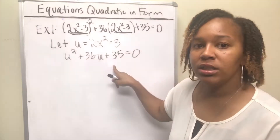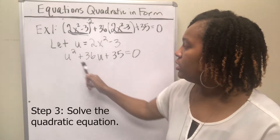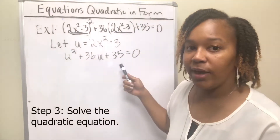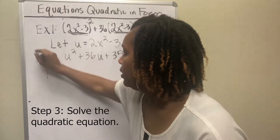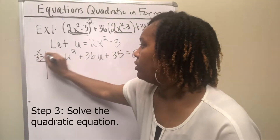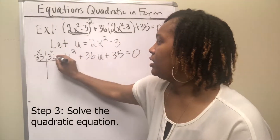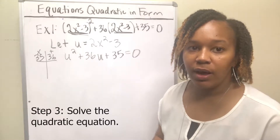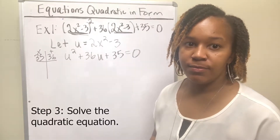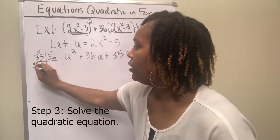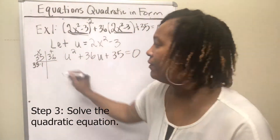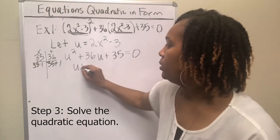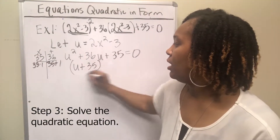The next step is to solve this quadratic equation. There is no number in front, so you can easily solve this by factoring. Take factors of 35 — two numbers that multiply to give you 35 and add to give you the middle number of 36. So what two numbers multiply to give you 35 but add to give you 36? That's 35 and 1: 35 times 1 is 35, and 35 plus 1 is 36.